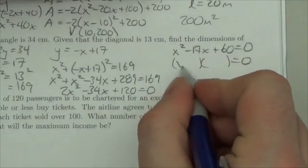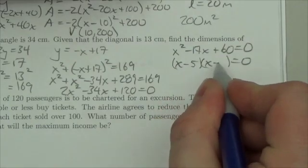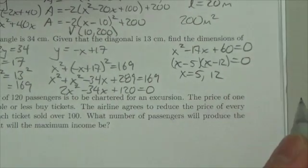Again, you could use the quadratic formula but this is going to end up being (x - 5)(x - 12). So x is either equal to 5 or 12.